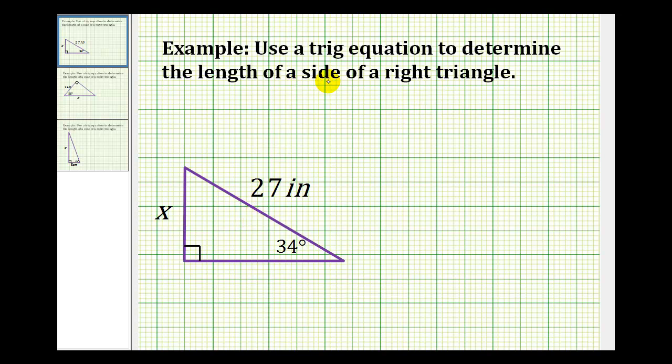In these examples, we want to use a trig equation to determine the length of the side of a right triangle. Looking at our diagram here, if we use the angle that measures 34 degrees, this side of the triangle would be the opposite side.